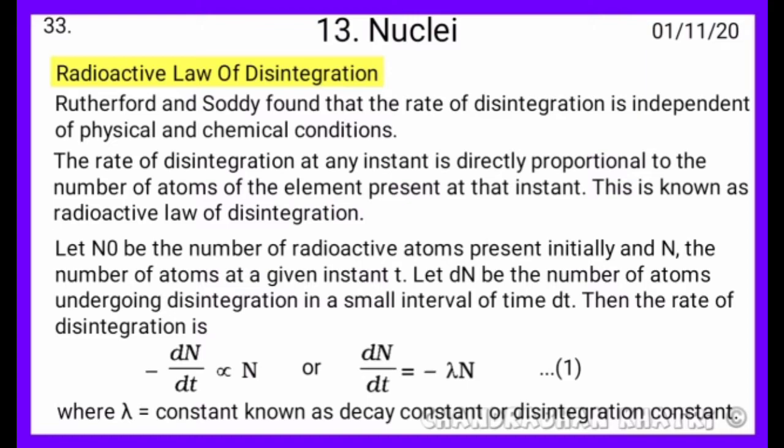Then the rate of disintegration is minus dn upon dt directly proportional to N, or dn upon dt equals minus lambda N. This is equation first, where lambda is constant known as decay constant or disintegration constant.